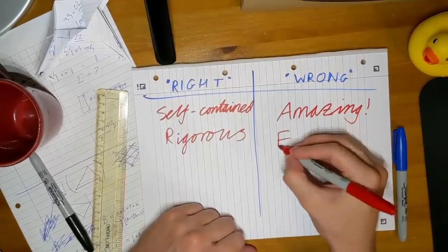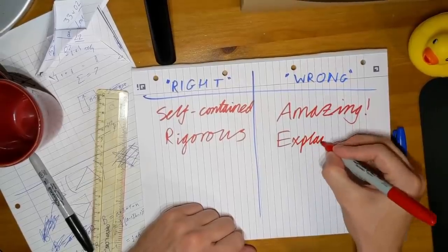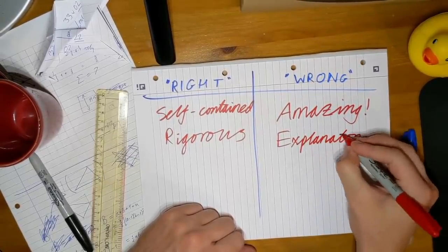On the other hand, the wrong proof is fun. More importantly, I think it does a better job of explaining why the result is true.